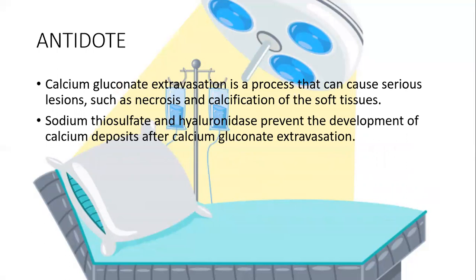Regarding the antidote: calcium gluconate extravasation is a process that can cause serious lesions such as necrosis and calcification of soft tissue. Sodium thiosulfate and hyaluronidase can prevent the development of calcium deposits after calcium gluconate extravasation. Jazakallah, thank you so much.